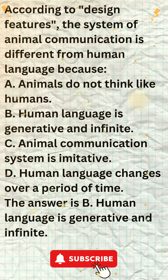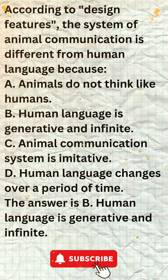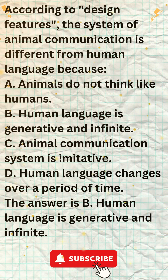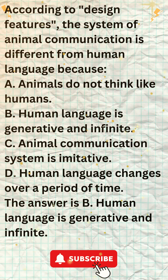The generative and infinite nature of human language is one of the things that makes us unique as a species. It allows us to communicate with each other in complex and nuanced ways and enables us to share our thoughts and ideas with the world. According to design features, human language differs from animal communication because humans can produce an unlimited number of sentences from a finite set of words, something not observed in animal communication systems, which tend to be limited and specific, lacking the complexity and versatility of human language.